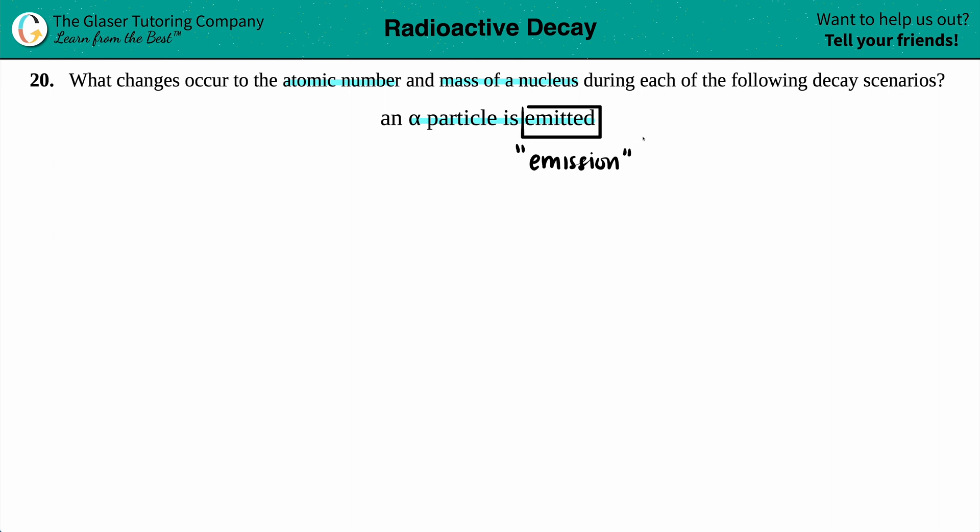That means that whatever particle they're talking about is going to be part of the products. So the particle is getting thrown into the products. For emission, particles are always in the products. So we know that this alpha particle is going to be thrown into the products, going into the atmosphere.